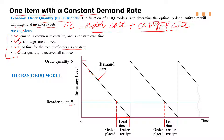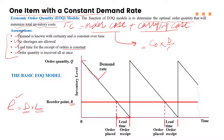The reorder point equals the demand rate multiplied by the lead time. Since both are constant and known, we can easily find the reorder point. For ordering cost, if the per-unit ordering cost is C_O, we multiply it by the number of orders per year, which is demand per year (D) divided by the order quantity (Q). This gives us the ordering cost per year.